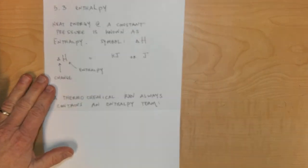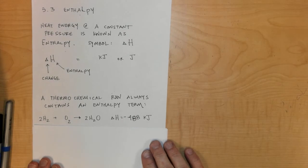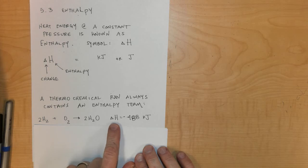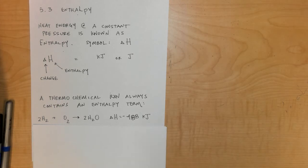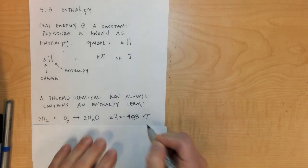A thermochemical reaction always contains an enthalpy term. For example, in this reaction H2 plus O2 goes to H2O, the enthalpy for the process is negative 488 kilojoules.